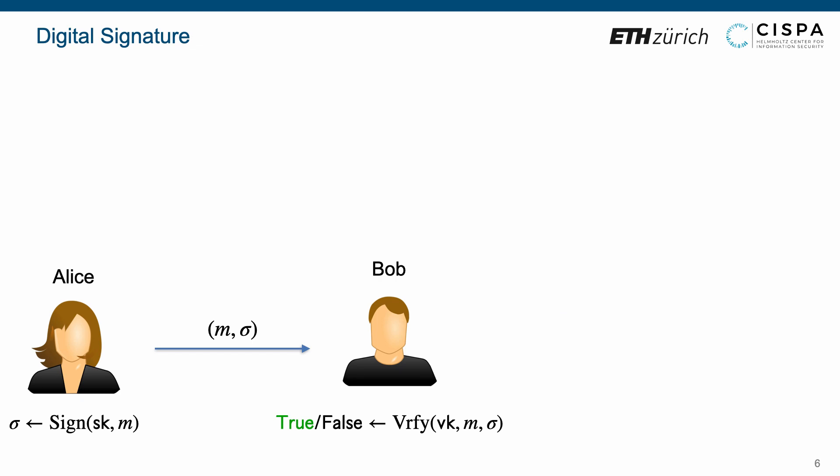Upon a signing key SK and a message M, the signer Alice can execute the signing algorithm to produce a signature sigma, and send both message and signature to the verifier Bob. Upon the corresponding verification key and the transcript received from Alice, Bob is expected to pass this verification by outputting the boolean value true.